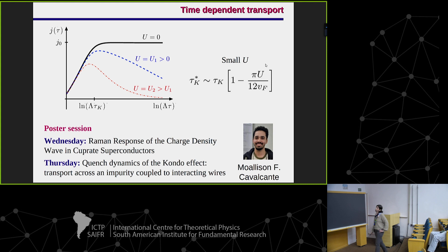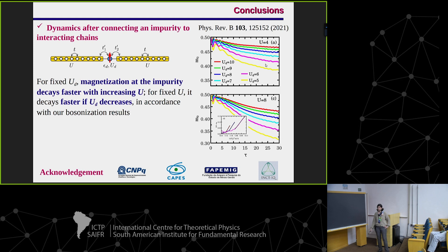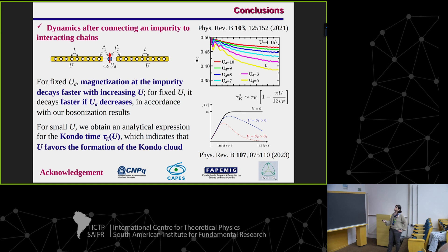If you want to know more details about the second paper, Mo Alisson will be presenting it tomorrow in the poster session. To summarize: in the first work, we look at the magnetization as a function of time and its dependence on the interaction U in the chains and Ud at the impurity site. The most important result is that when we fix Ud, the magnetization decays faster if we increase U. This is related to the expression we got in the second work: the Kondo time decreases as we increase U. Thank you for your attention.